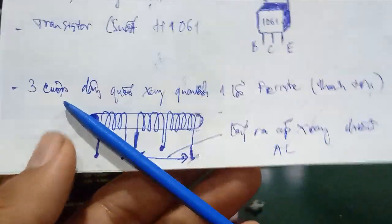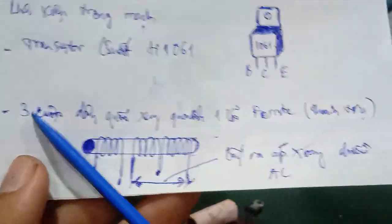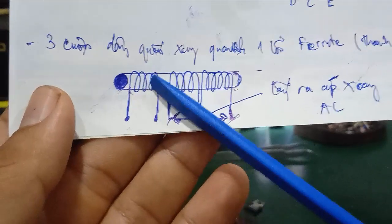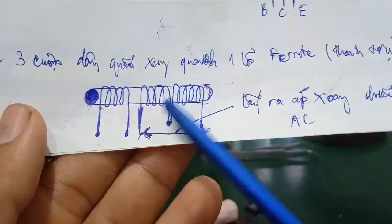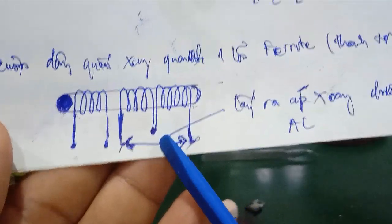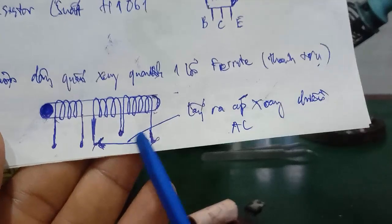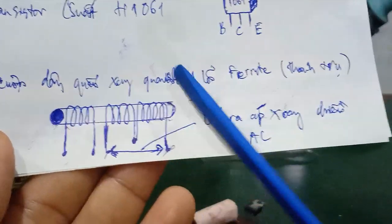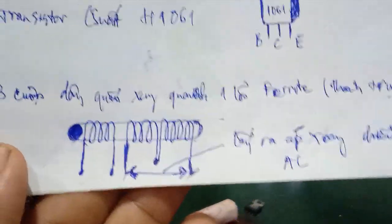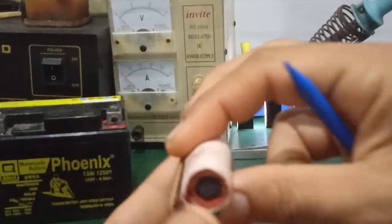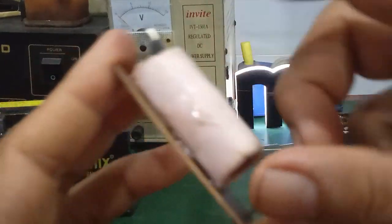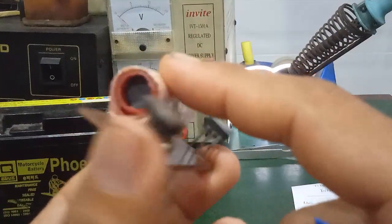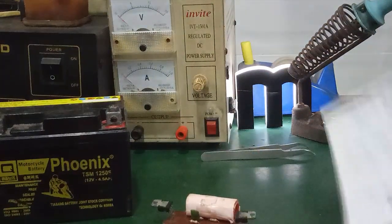Ở đây mình có vẽ ra 1 cái sơ đồ của cuộn dây, gồm 3 cuộn dây quấn xung quanh 1 lõi ferric dạng thanh trụ. Trong đó có 2 cuộn dây sẽ nối chung 1 điểm, và cái điện áp ngõ ra AC sẽ lấy từ 2 đầu dây này. Hình dáng của nó giống như cái phần cao tần, phần LC giao động trong những cái máy radio thời xưa, có những cái lõi như thế này với nhiều cuộn dây quấn để tạo ra cái tần số cộng hưởng LC.